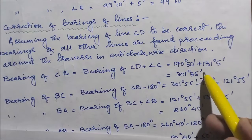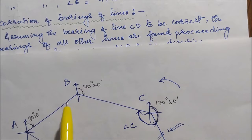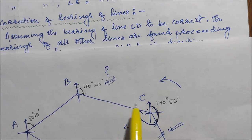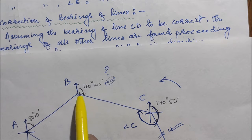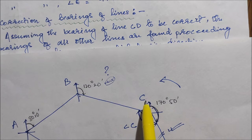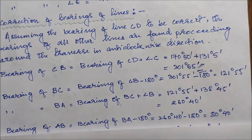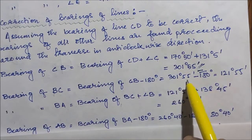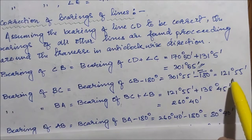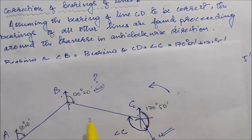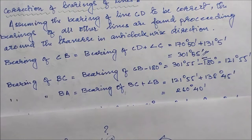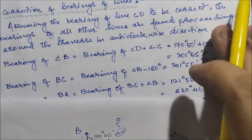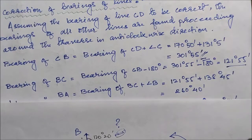Now we find the bearing of BC from bearing of CB. The bearing of BC is bearing of CB minus 180° = 301°55′ − 180° = 121°55′. We have found the corrected bearing of BC. In the original question, it was given as 120°20′, but the corrected value comes out to be 121°55′.